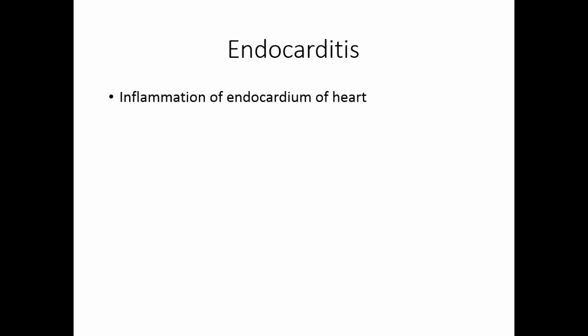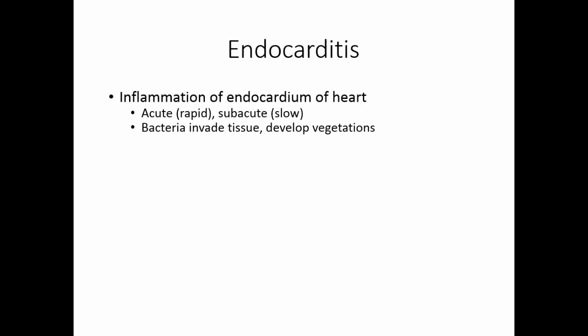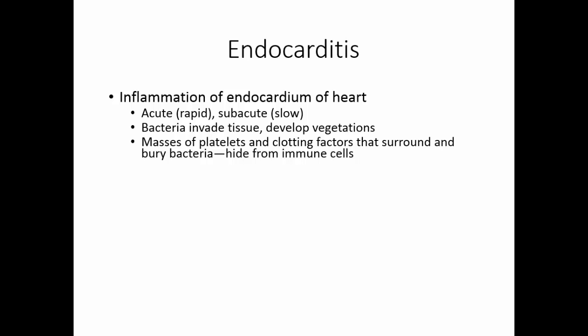Endocarditis is an inflammation of the endocardium of the heart. It can be acute, with rapid onset and sudden symptoms, or subacute, with very slow onset and very subtle symptoms. The bacteria invade the tissue of the heart and develop vegetations — masses of platelets and clotting factors that surround and bury the bacteria. This effectively hides the organisms from the immune system. The vegetations, however, can break off and get into the bloodstream, becoming emboli.